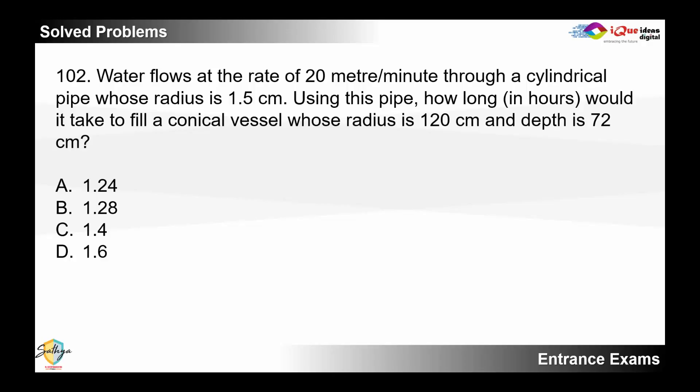A simple problem of mensuration. Water flows at the rate of 20 meters per minute through a cylindrical pipe whose radius is 1.5 centimeter. Using this pipe, how long in hours would it take to fill a conical vessel whose radius is 120 centimeters and depth is 72 centimeters?